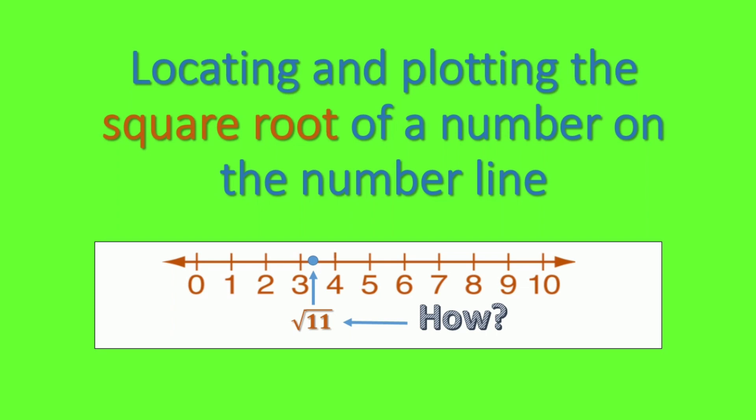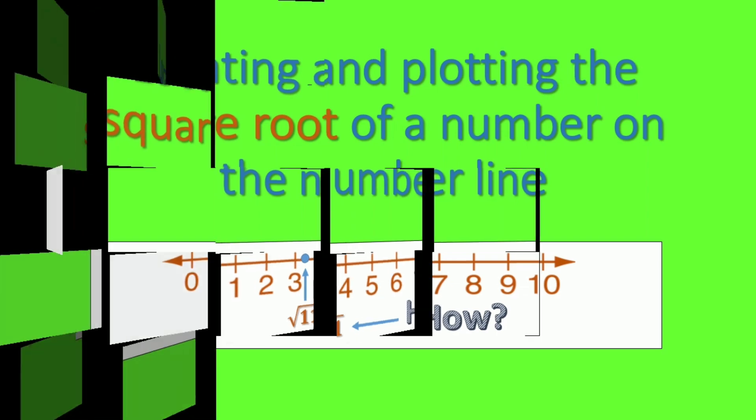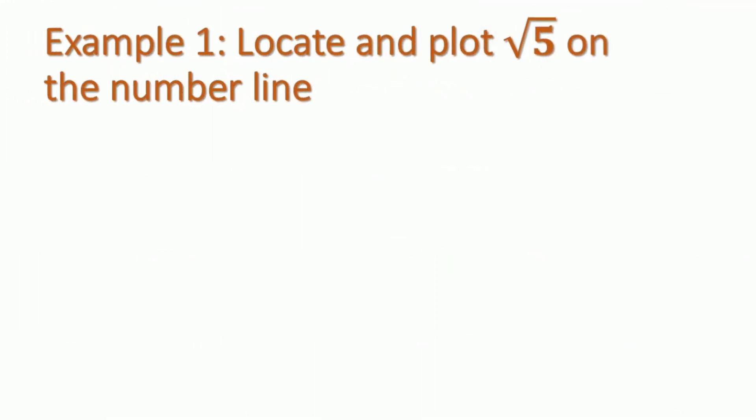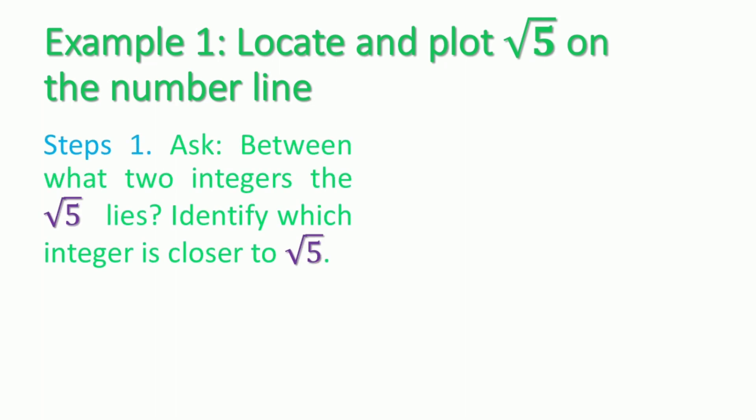How did it happen that that is the square root of 11? Example number one: locate and plot the square root of five on the number line. We have the following steps. Step one: ask between what two integers the square root of five lies, and after that identify which integer is very close to the square root of five.